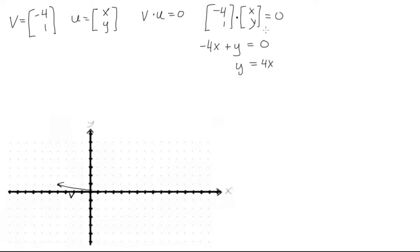Now what this means is that for this general vector u which is orthogonal to this specific vector v, whatever values we choose the y value has to be four times bigger than the x value. So we'll just write this as, we'll say u in general has to be, if we have some value x, the y component has to be four times bigger, so we would say 4x.